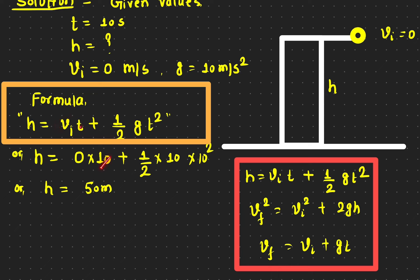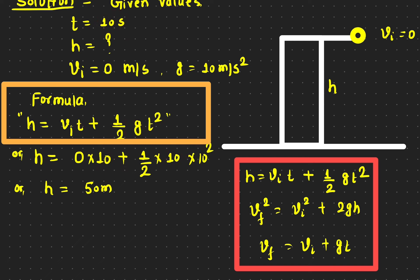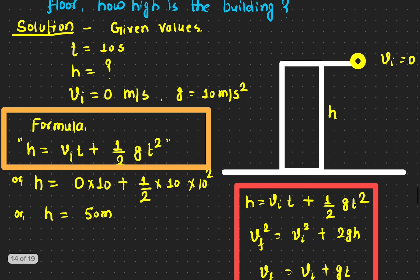Let's plug in all the known numbers. The initial speed is 0, the time is 10 seconds, and the g value is 10 m/s². Using the equation, we get the height as 500 meters — so if a ball takes 10 seconds to reach the ground, the height of the building is approximately 500 meters. Of course, we are ignoring air resistance.